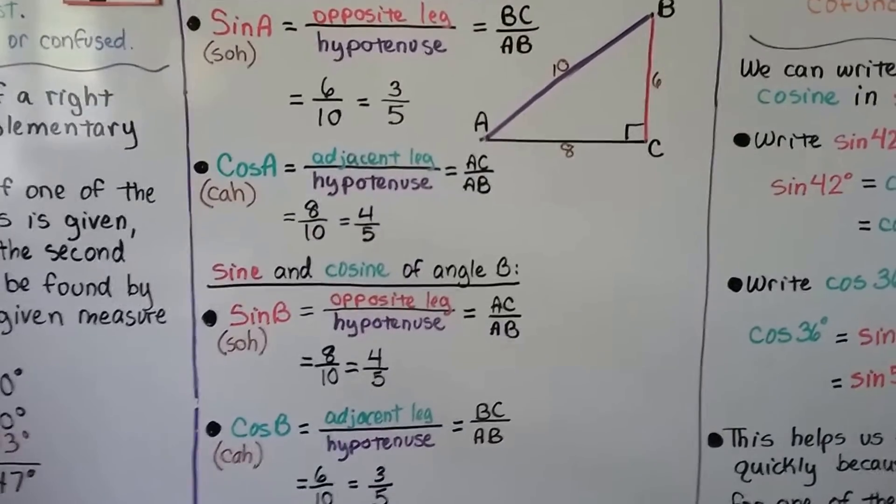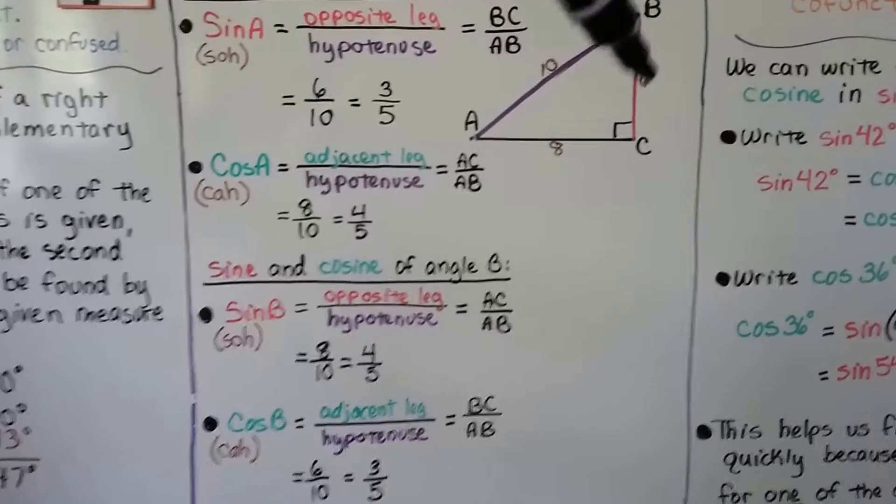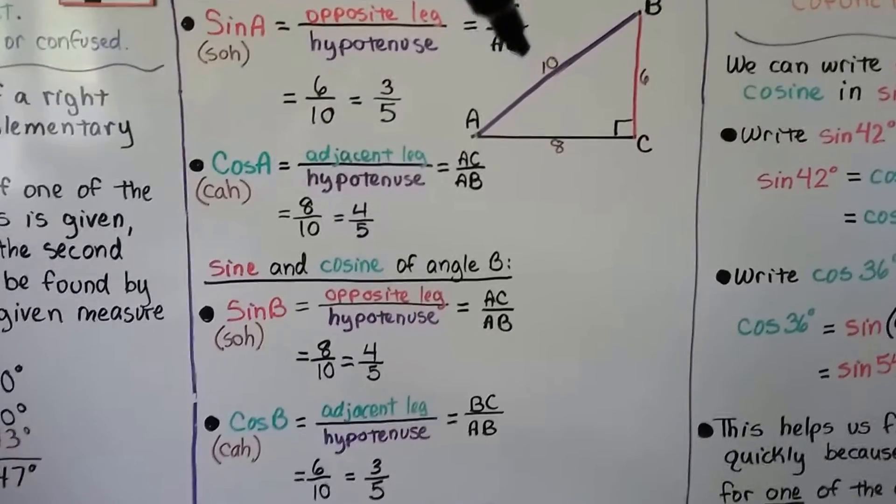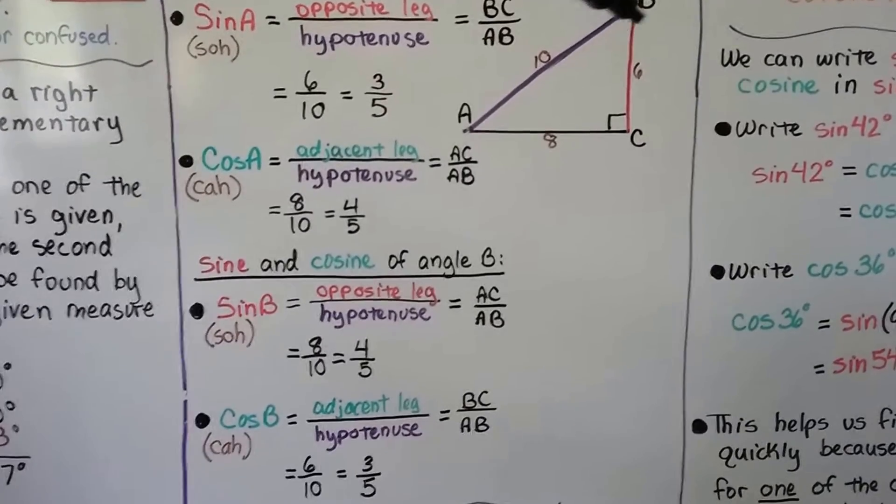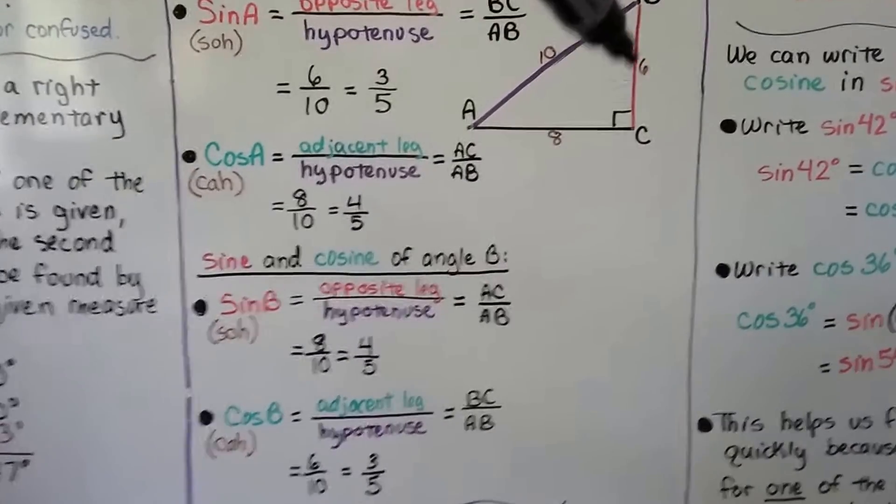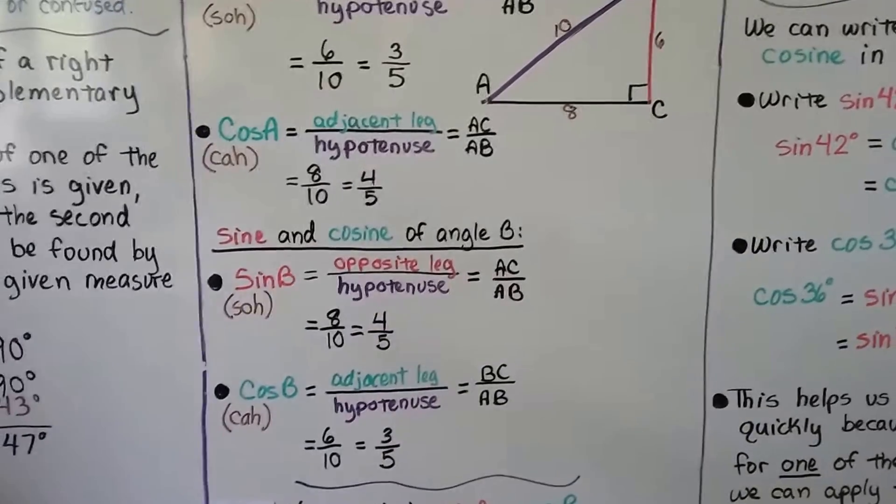And the sine and cosine of angle B up here, the sine of B would be the opposite leg, this 8 over the hypotenuse 10, which simplifies to 4 fifths. And the cosine of B would be the adjacent leg, this 6 over the hypotenuse 10, which simplifies to 3 fifths.